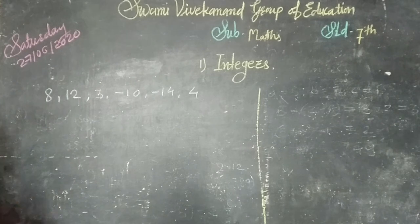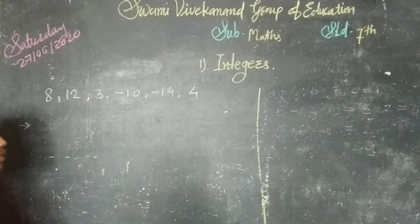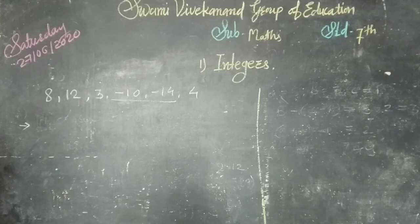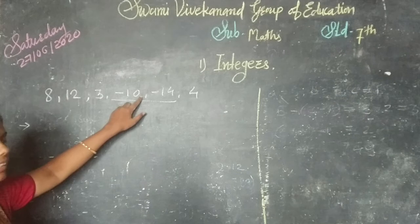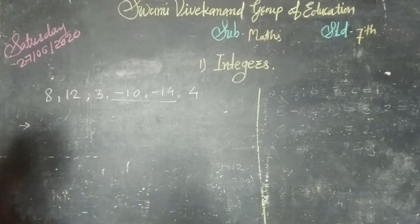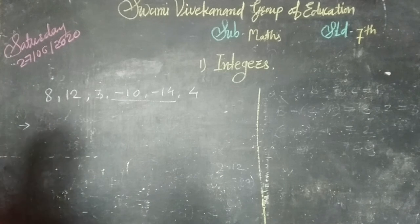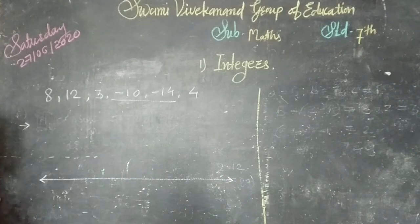To do this we should know which is the least number. The numbers 8, 12, 3, and 4 are positive integers. Out of minus 10 and minus 14, one should be the least. Because for integers: all positive integers are always greater than negative integers, zero is also always greater than any negative integer, and the right side number on the number line is always greater than the left hand side number. I will draw a number line for better understanding, since out of minus 10 and minus 14, one is the least.